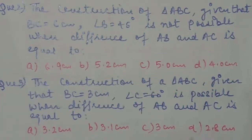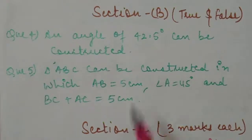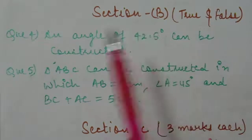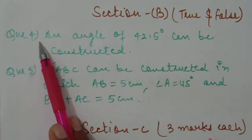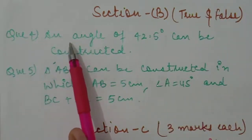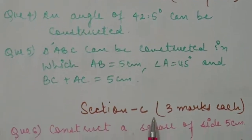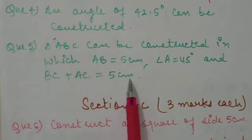These three MCQs are there. This is Section B, true and false. They are one markers, one mark each question. Question number four. This is your question number five.